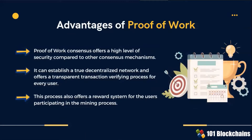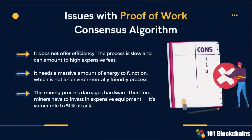The advantages of Proof-of-Work: it offers a high level of security compared to other consensus mechanisms, and it can establish a true decentralized network while offering a transparent transaction verifying process. However, the process is slow and can amount to high expensive fees, it needs a massive amount of energy to function, and the mining process damages computer hardware.